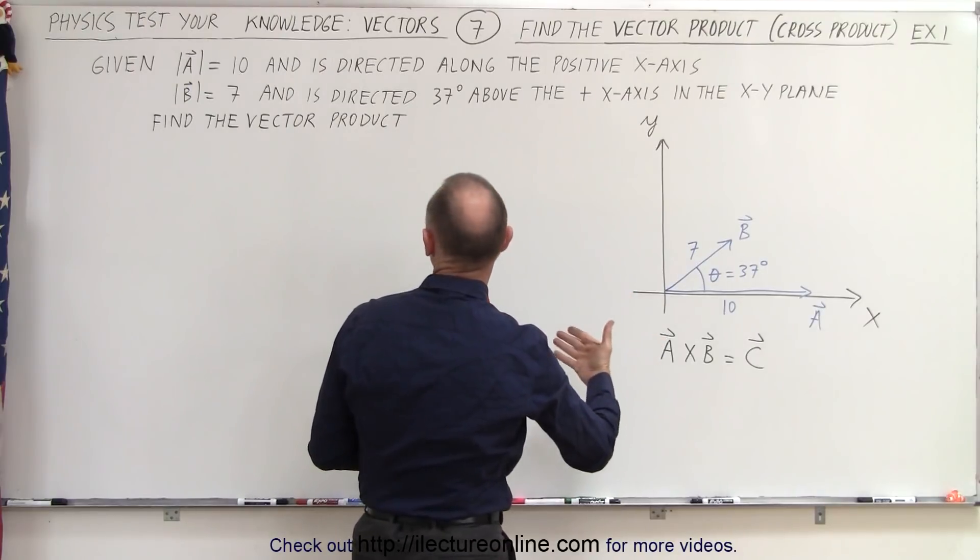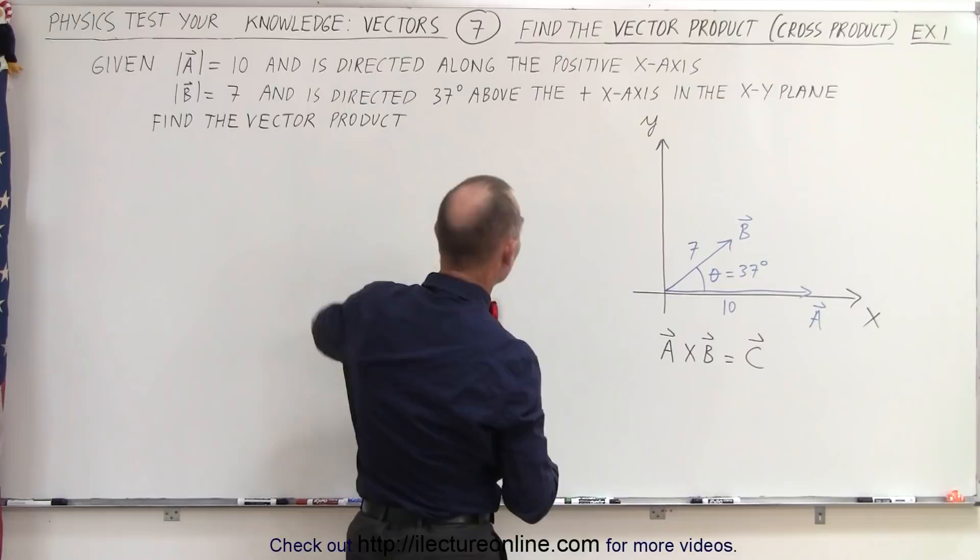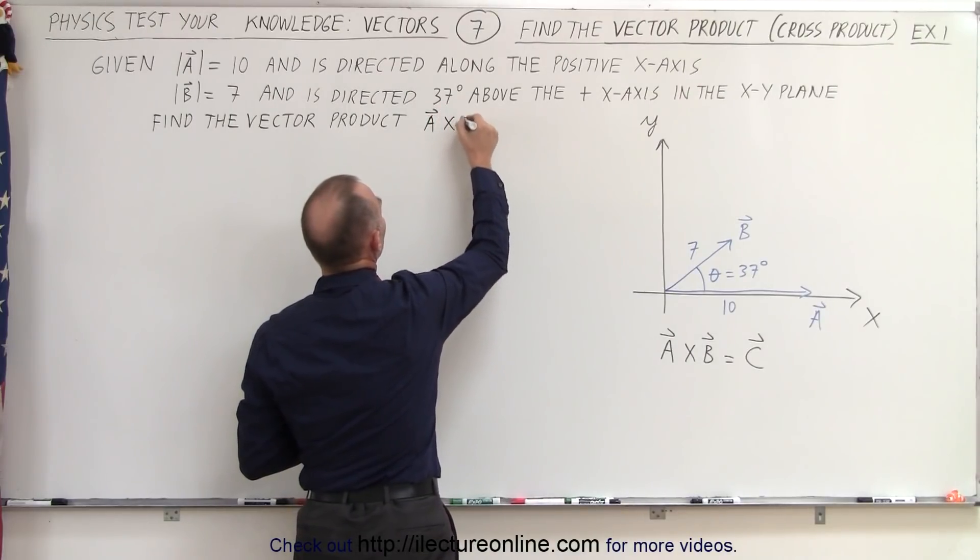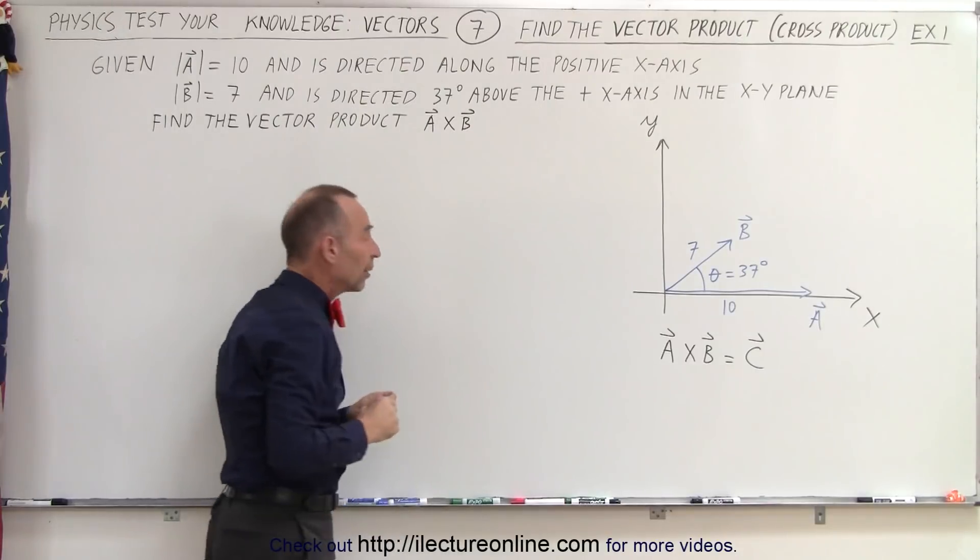We're supposed to find the vector product A cross B. Let's go ahead and put that in, A cross B. So let's find the product A cross B.